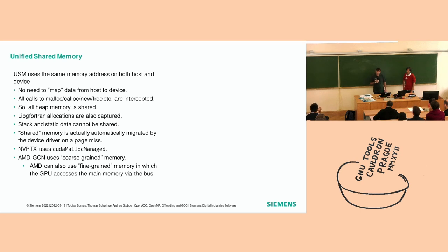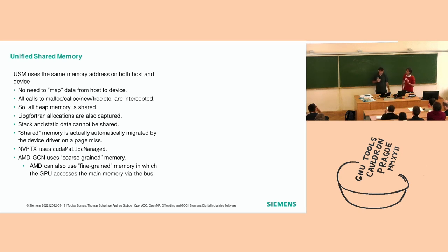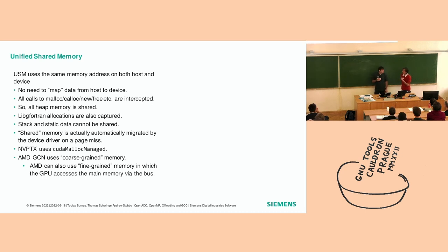In theory, all heap memory is now shared between device and host and will magically migrate on demand. libgfortran has also been ported to use this, so any allocations inside libgfortran will also use USM when the mode is active. Third-party libraries will not work, and stack and static data is not suitable for USM. This is implemented on NVPTX using CUDA malloc managed API, and AMD have a very similar implementation with different API names. With AMD, the GPU can also access non-managed addresses slowly through the PCI bus, giving an extra ability over CUDA's strict segmentation fault on unmanaged addresses.